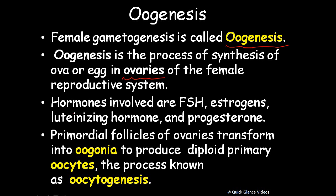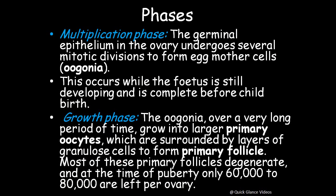The primordial follicles of the ovaries transform into oogonia to produce diploid primary oocytes, in a process called oocytogenesis. The first phase is the multiplication phase: the germinal epithelium in the ovary undergoes several mitotic divisions to form egg mother cells called oogonia. This occurs while the fetus is still developing and is complete before the birth of the child.